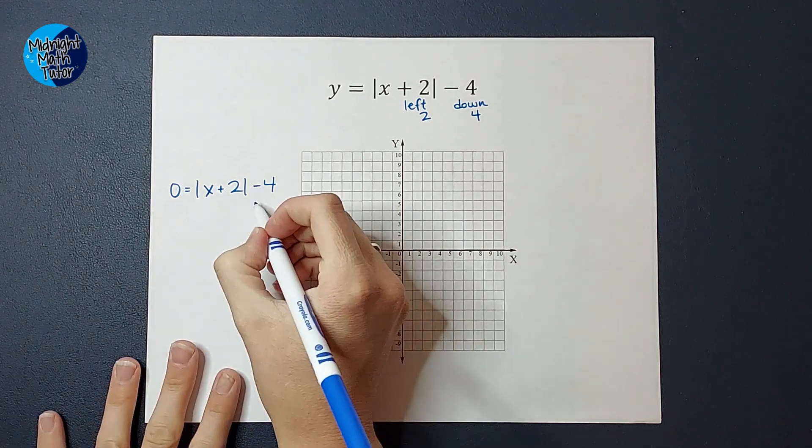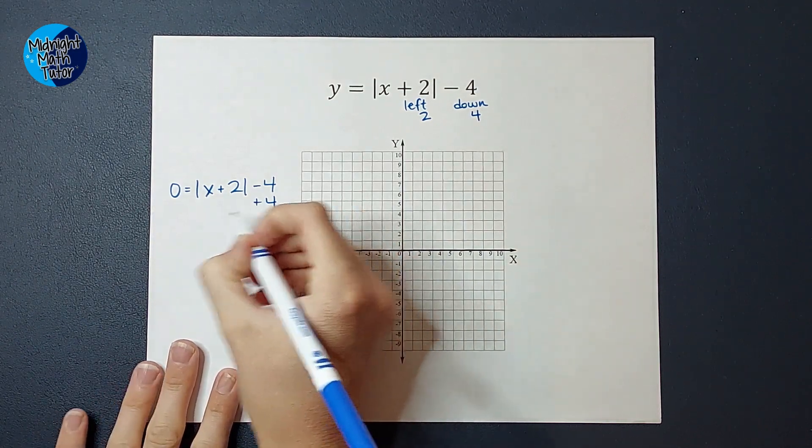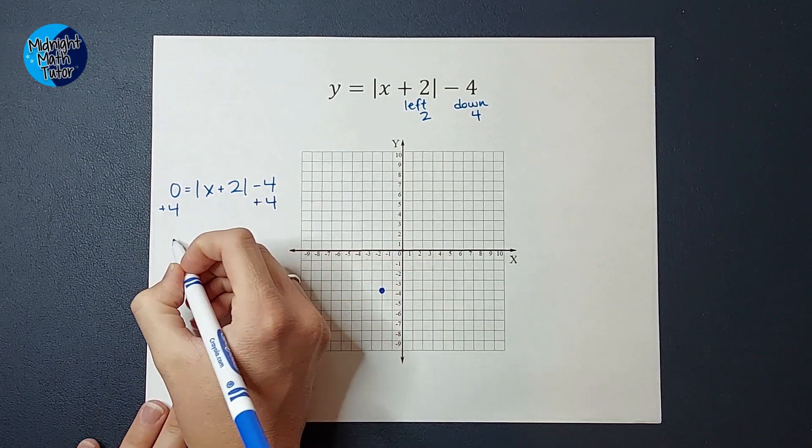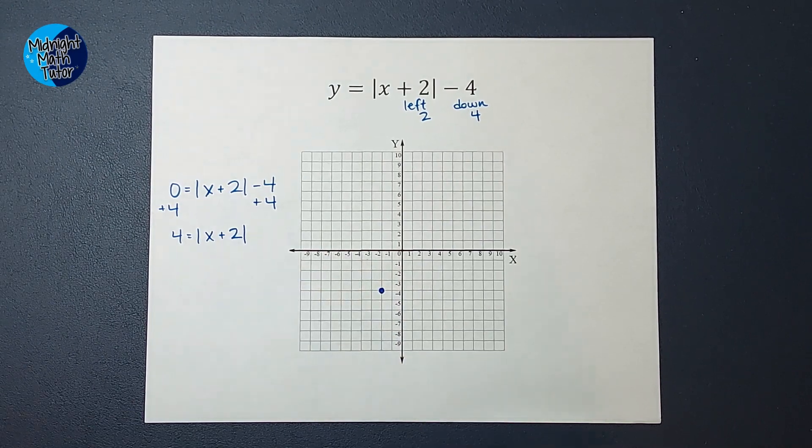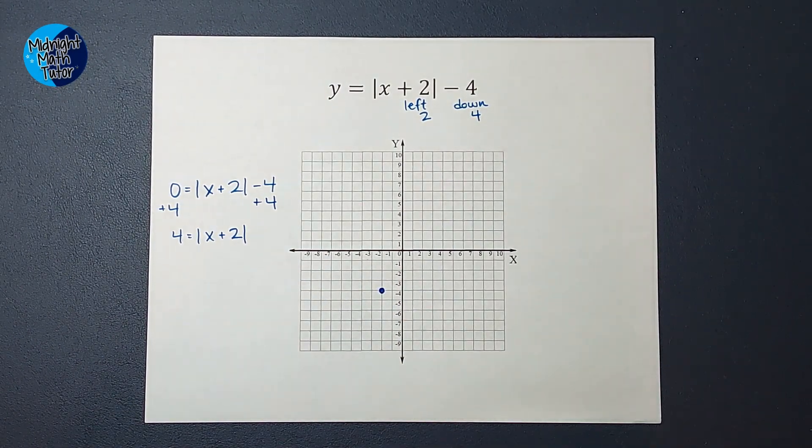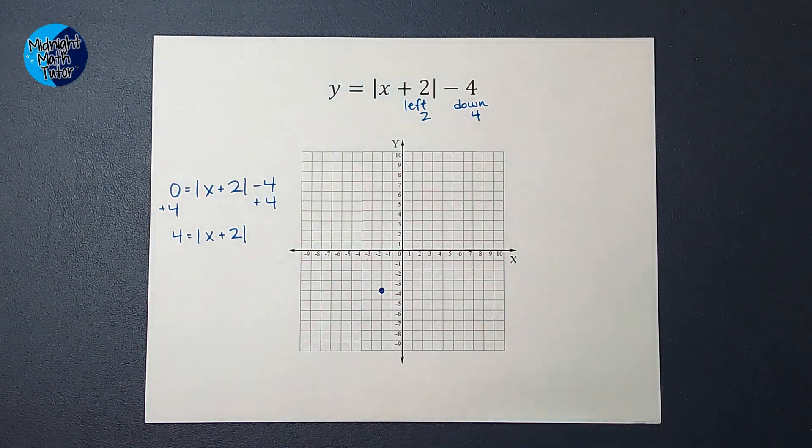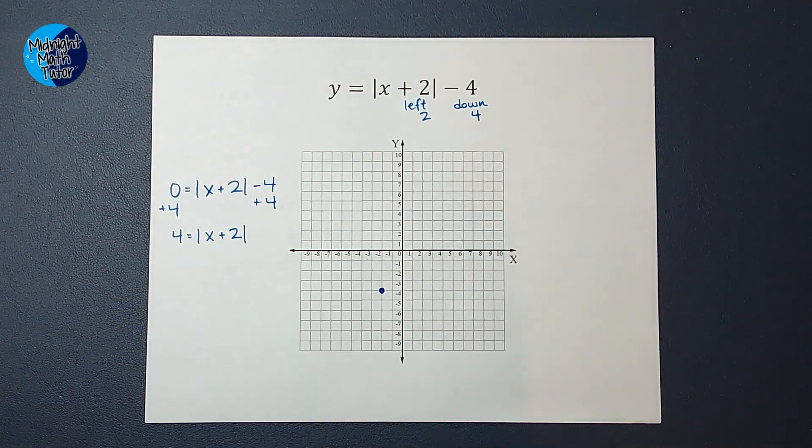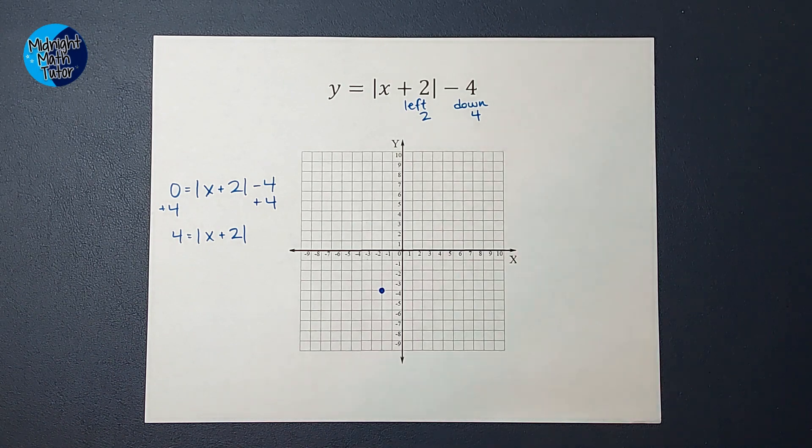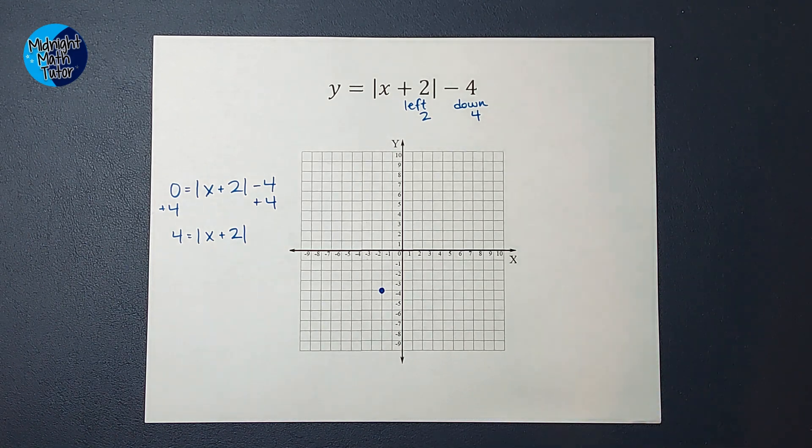So my goal is to get X alone. So I'm going to add four to both sides. So I end up with four equals the absolute value of X plus two. Now, if you need an absolute value review, I'll link a video for you in the corner. So what absolute value is asking for is it's asking for a distance. It's asking how far is this value in here from zero. So if you have the absolute value of negative five, the answer is five because you can't have a negative distance. Or if you have the absolute value of five, your answer is five.